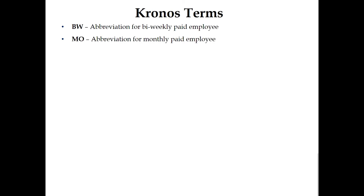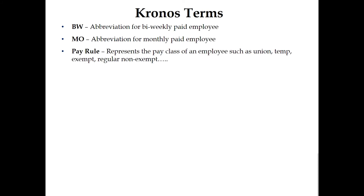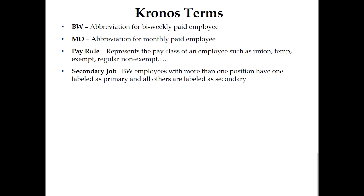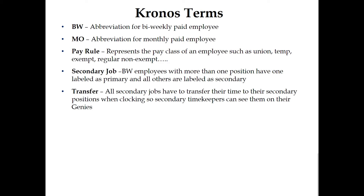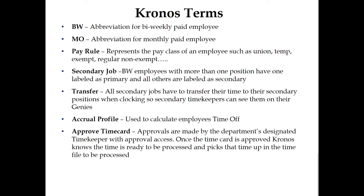Kronos Terms: BW is an abbreviation for bi-weekly paid employees. MO is an abbreviation for monthly paid employees. Pay Rule represents the pay class of an employee such as union, temp, exempt, regular, or non-exempt. Secondary Job means bi-weekly employees with more than one position have one labeled primary and all others labeled secondary. All secondary jobs must transfer their time to their secondary positions when clocking so secondary timekeepers can see them on their Genies. Accrual Profile is used to calculate employees' time off. Approved Time Card means approvals are made by the department's designated timekeeper with approval access, signaling that time is ready to be processed.